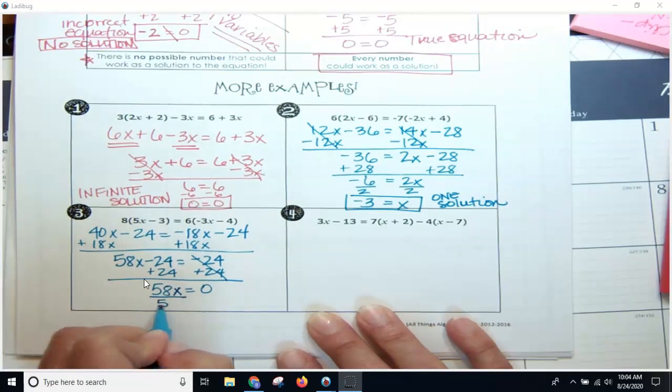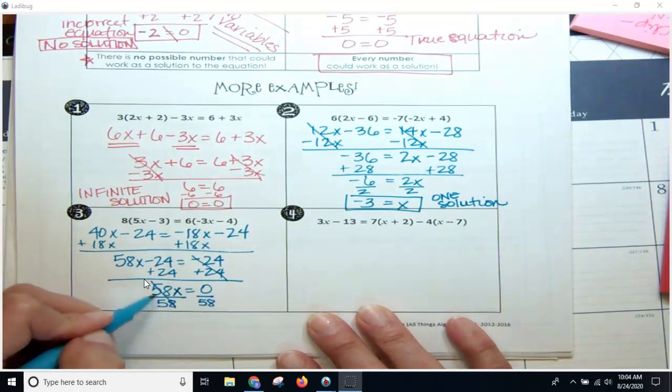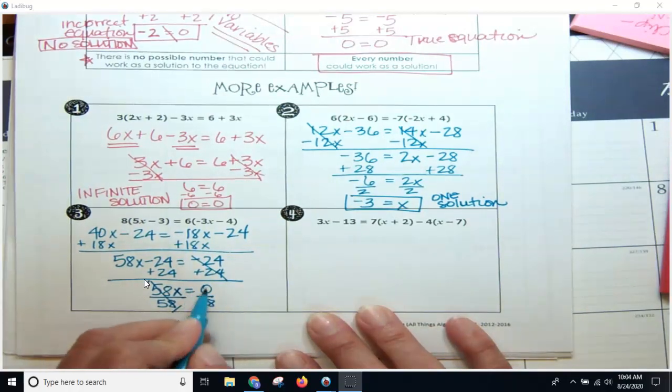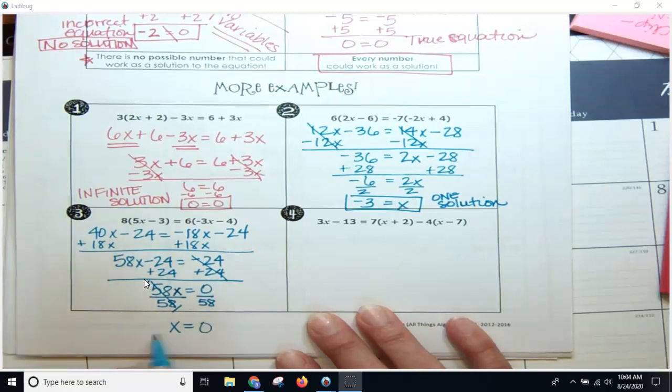As long as you have a variable, you keep solving. 58 divided by 58 is 1, and I get x equals 0 over 58 is 0.